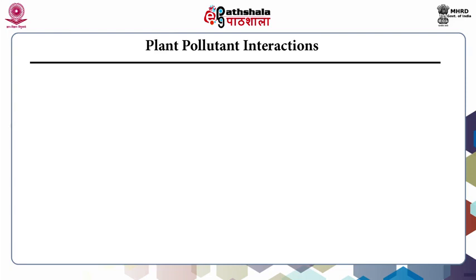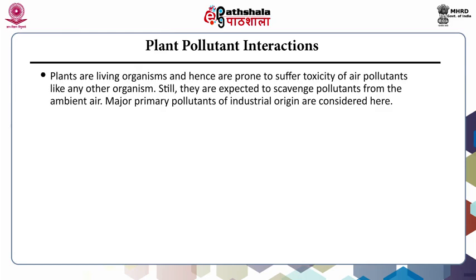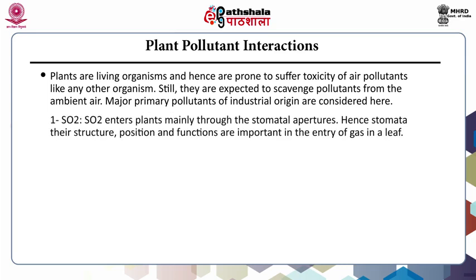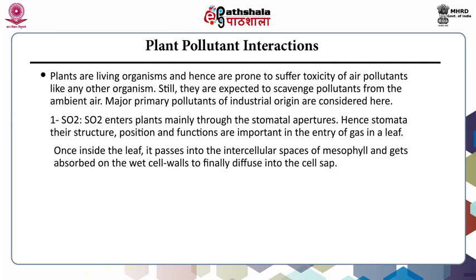Coming to the first guideline, that is plant-pollutant interactions: plants are living organisms and hence are prone to suffer toxicity of air pollutants like any other organism, yet they are expected to scavenge pollutants from the ambient air. The major primary pollutants of industrial origin considered here include sulfur dioxide, which enters plants mainly through the stomata. Hence stomata structure, position and functions are important in gas entry into a leaf. Once inside the leaf, the gas passes into the intercellular spaces of mesophyll cells and gets absorbed on the cell walls to finally diffuse into the cell sap.